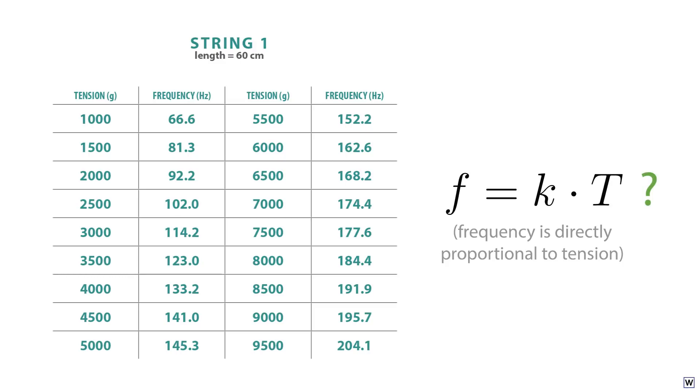This would mean that if tension doubled, frequency would also double. However, our data quickly helps us reject this hypothesis. When our tension doubles from 1,000 to 2,000 grams, our frequency only increases by a factor of about 1.4. It doesn't double. Now, when does our frequency double? A careful look at our table shows that our frequency approximately doubles when our tension increases by a factor of 4.